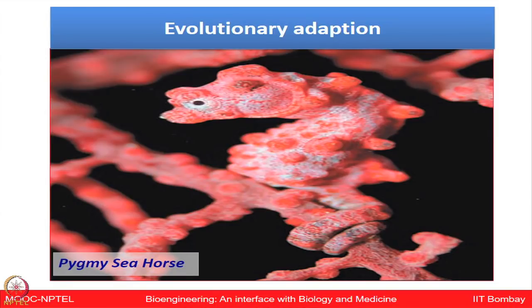The pygmy seahorse provides an example of evolutionary adaptation. Its appearance camouflages it in its environment, as seen in the red coloring. Such adaptations evolve over many generations and become part of the hereditary information — this is part of Darwinism and evolution, where positive changes best suited to the environment can be passed from one generation to the next.